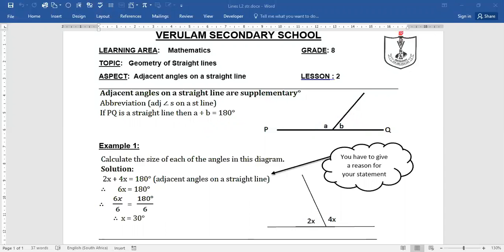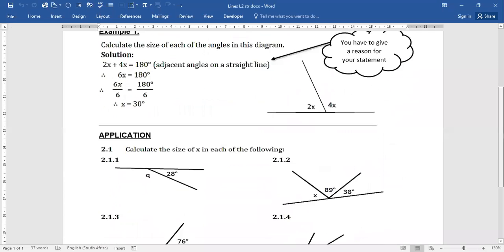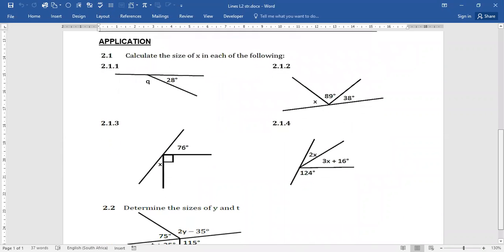Now if you look at the next example or the application that we have, in this application, you look at the first application. This is your straight line. And the two angles that make up the straight line is q and 28. So q plus 28 is equal to 180. You need to give your reason.